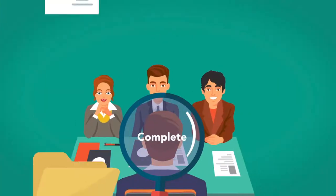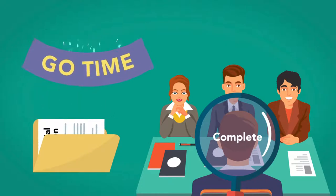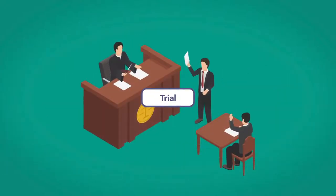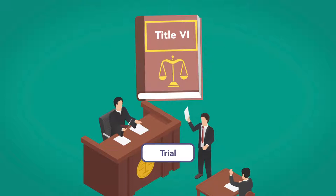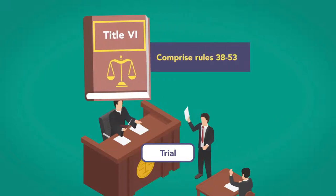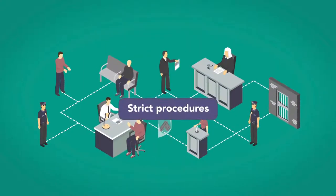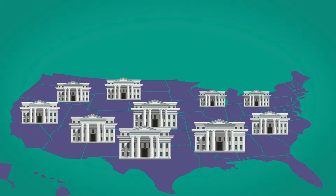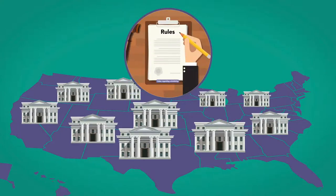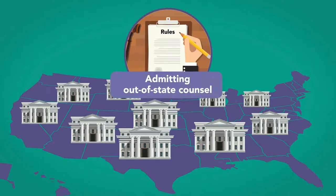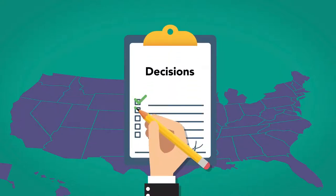Once discovery is complete and all pretrial motions have been decided, it's time for trial. Trials are governed by Title VI of the rules and comprise rules 38 to 53. Trials are conducted in accordance with strict procedures, but there is also room for individual courts to develop their own sets of rules regarding scheduling, limiting the number of witnesses, admitting out-of-state counsel, and numerous other decisions that are left to them by the rules.